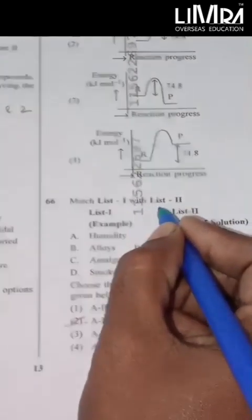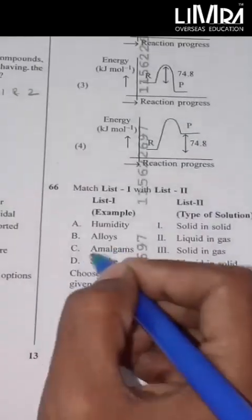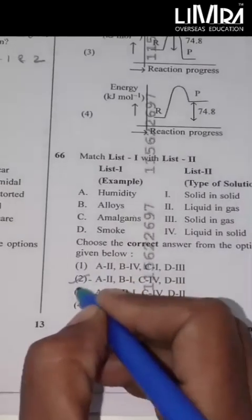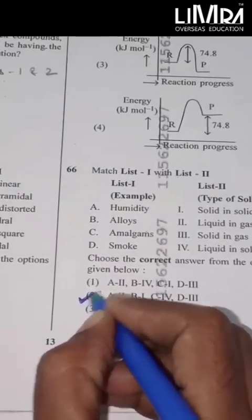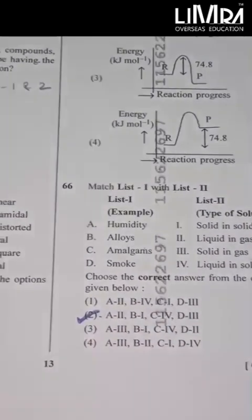Match list 1 with list 2. Choose the correct answer from the option given below. The right answer is A2B1C4D3. Thank you.